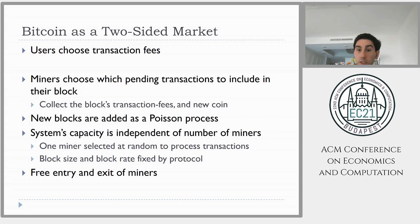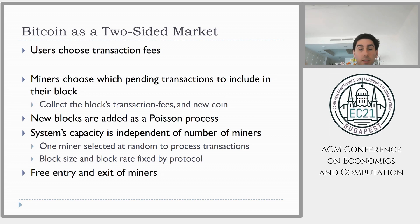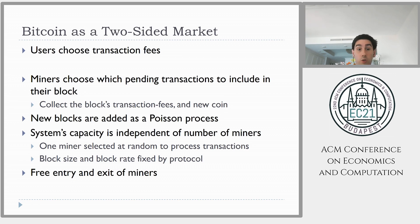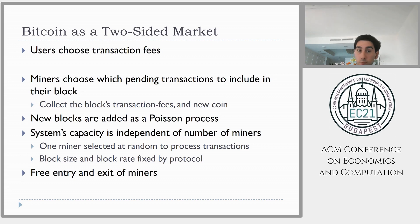New blocks are added on average every 10 minutes, but because of how the system randomly selects a miner, there's randomness in how long it takes before a block is found — well approximated by a Poisson process. Sometimes it's five minutes, sometimes 15 minutes, so there's potential for delays. The system's overall capacity — how many transactions per unit time it can process — is independent of the number of miners. If you double the computational power, you still process the same number of transactions per unit time.